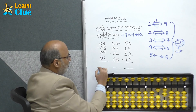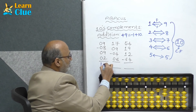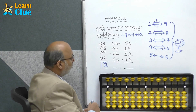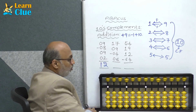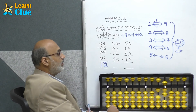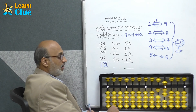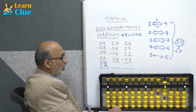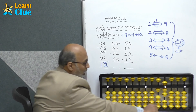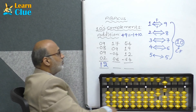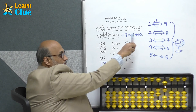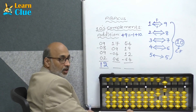Now they are asking plus 2, which is easily available. What is the answer? 12. Next problem: 10 plus 7 is 17. Plus 9 — we don't have enough beads to add 9. Who is the friend of 9? 1. So minus 1 plus 10.